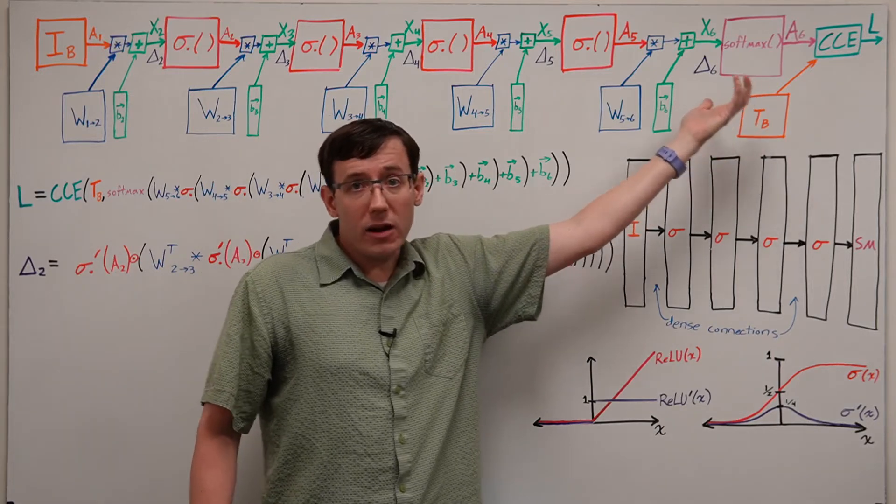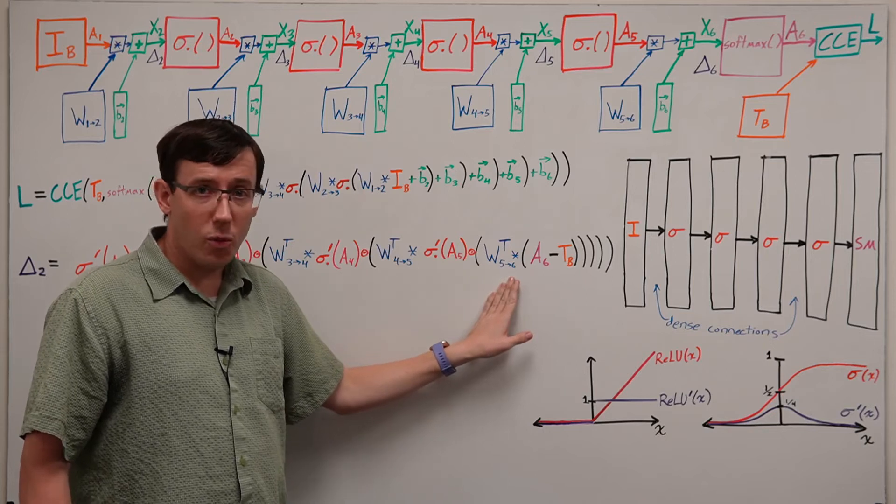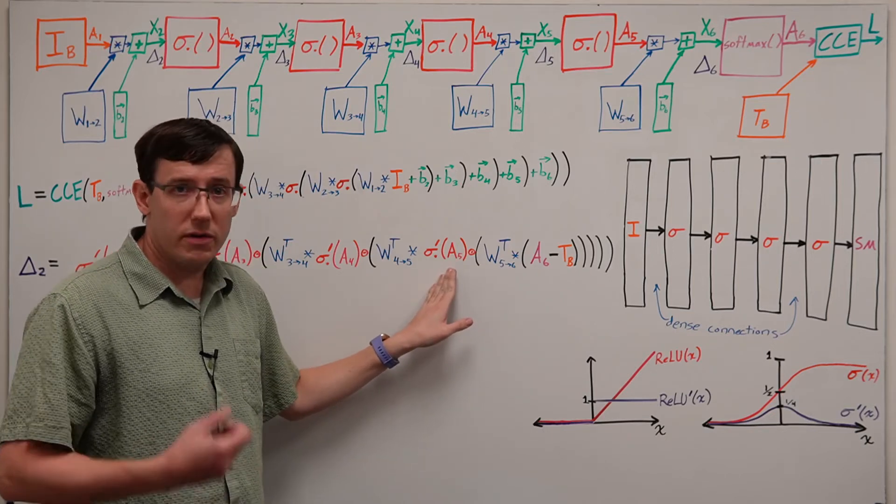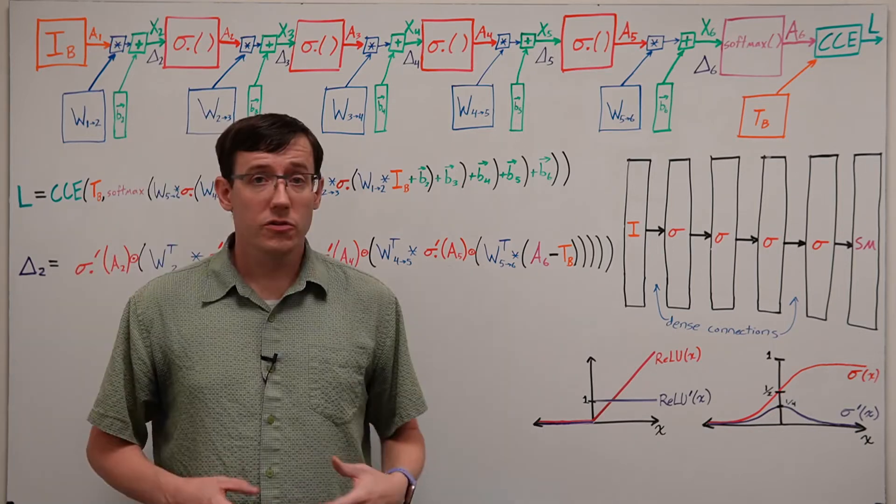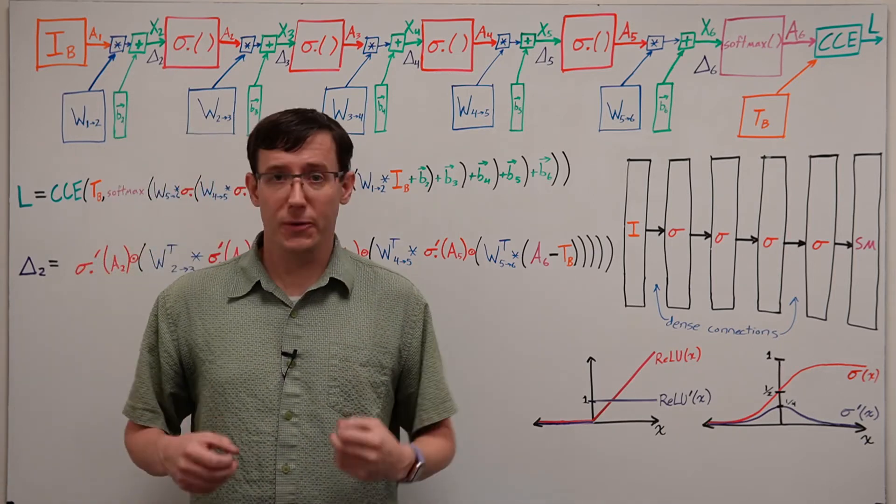And so for every layer we propagate derivatives through, we multiply by both the weights and the derivative of the activations. So the question is, why does this cause a problem when training deep neural networks?